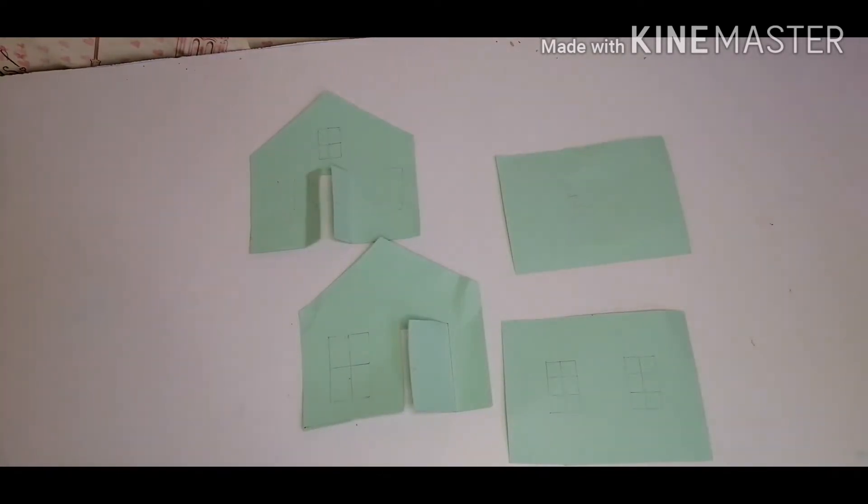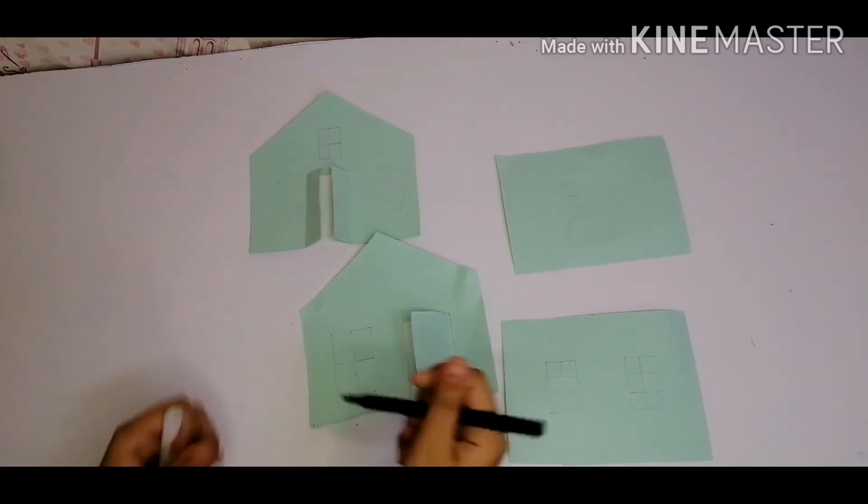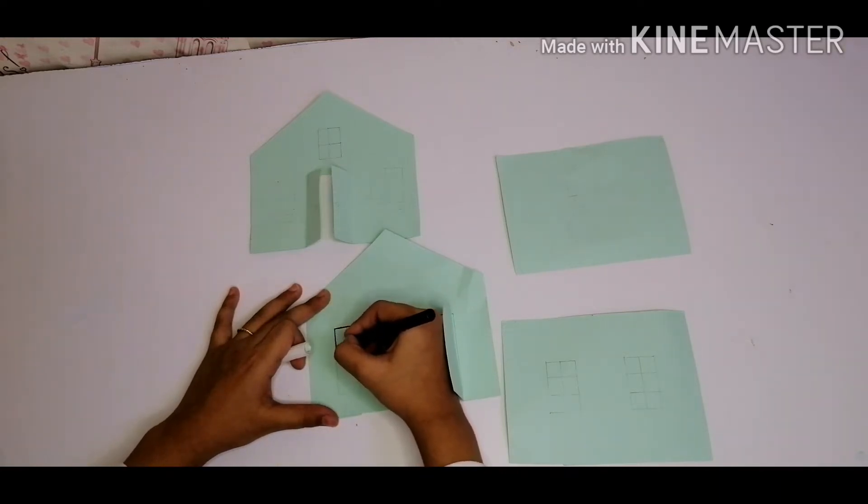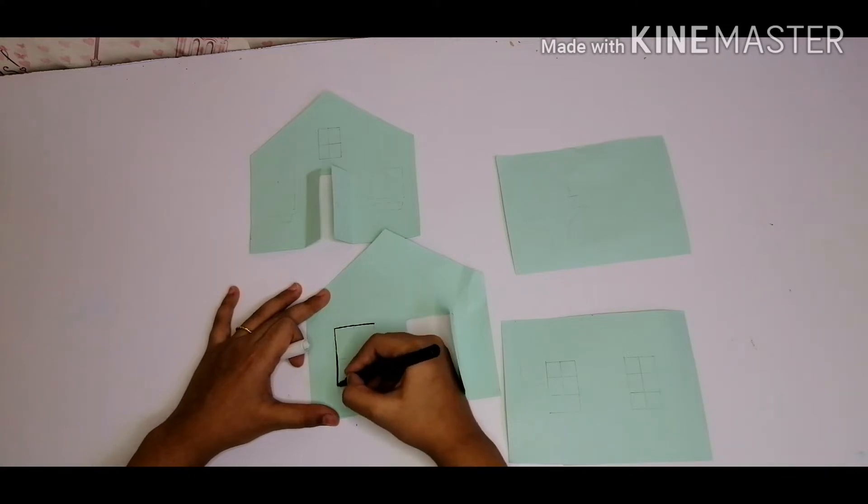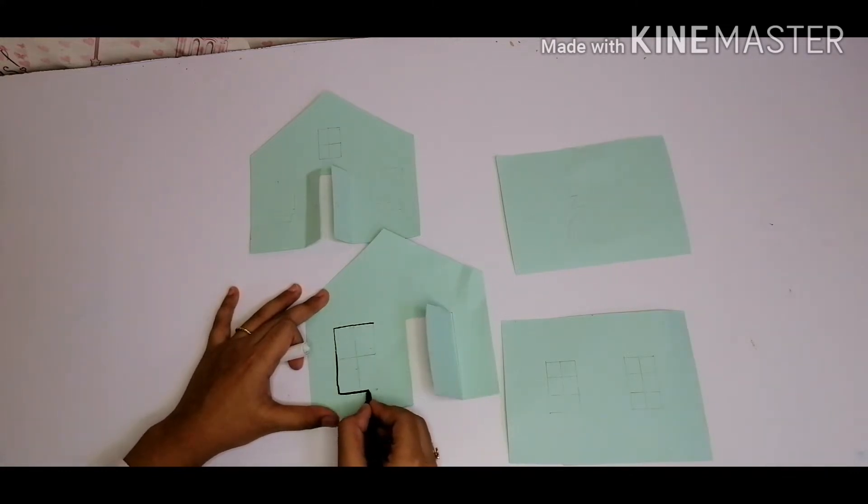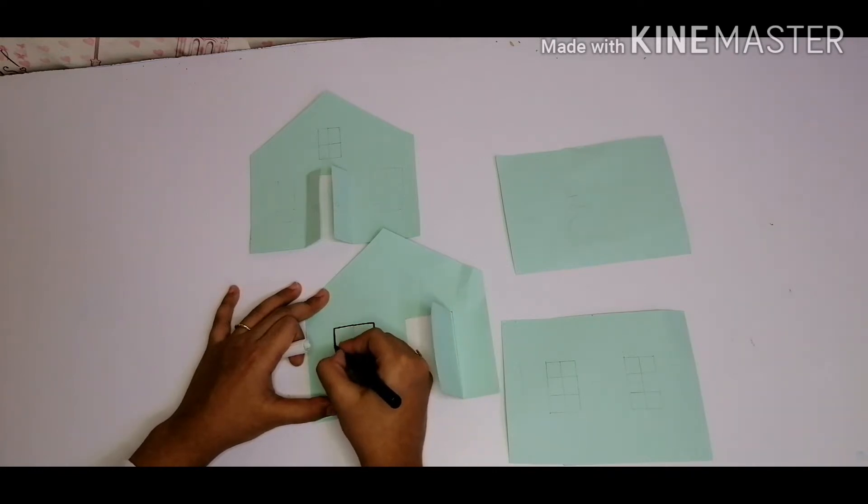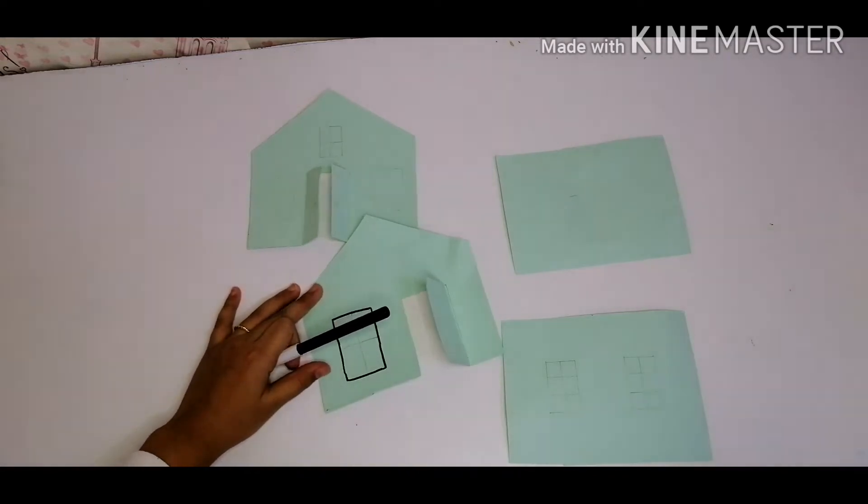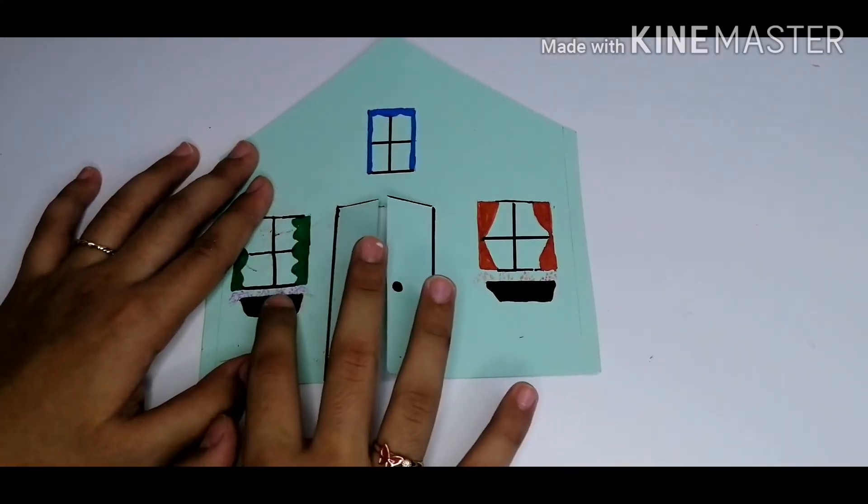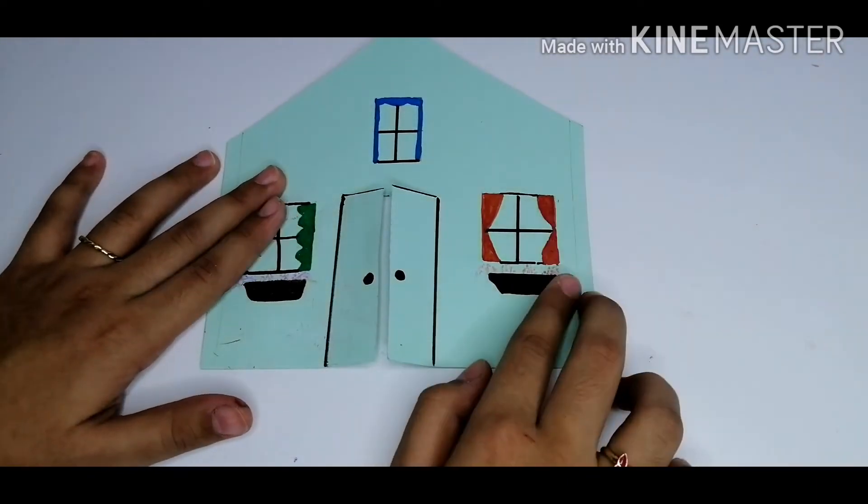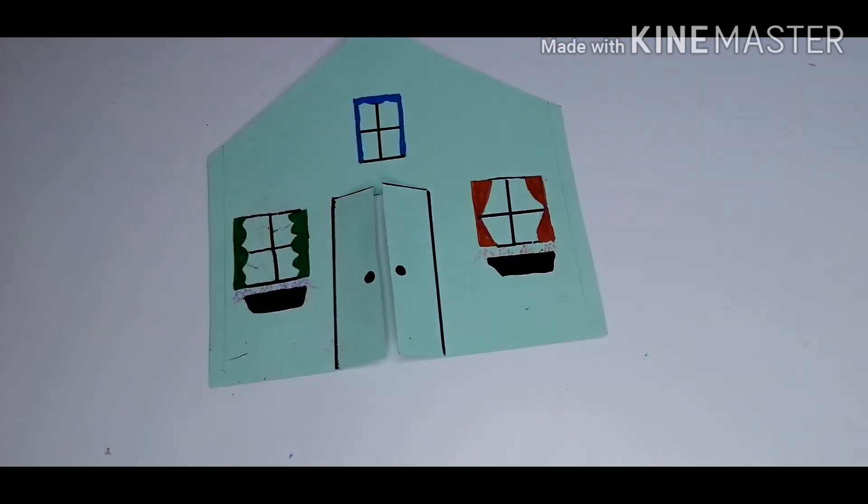So now we are going to outline the things we have drawn, then we are going to color. Here I have made some curtains and some flowers in the flower pot. And then don't draw this cap because these are going to attach our house.